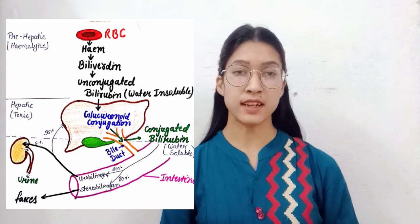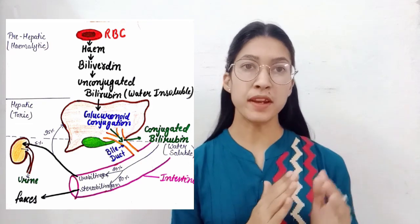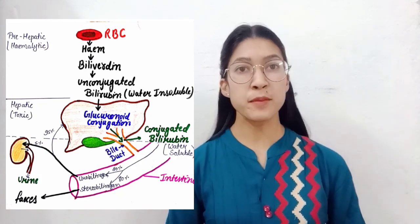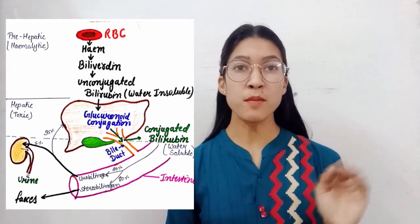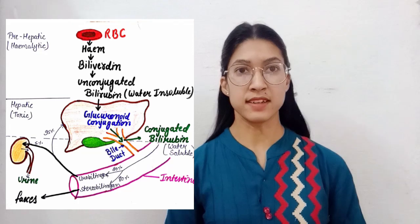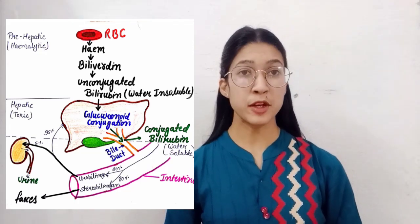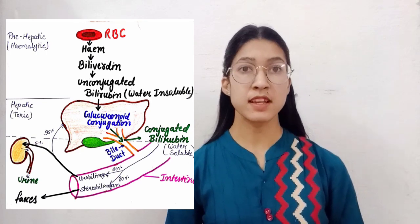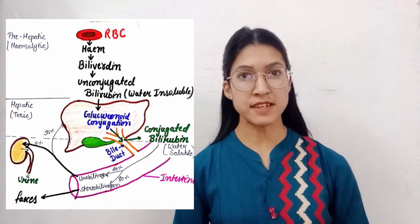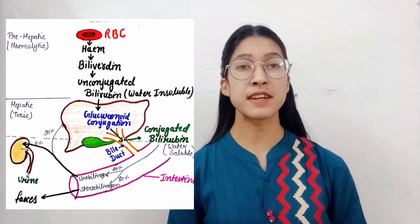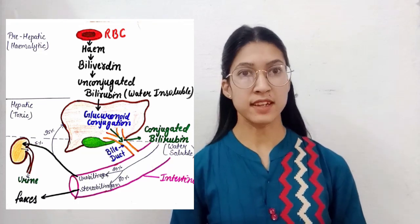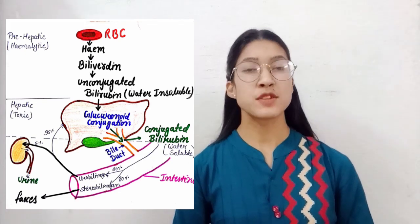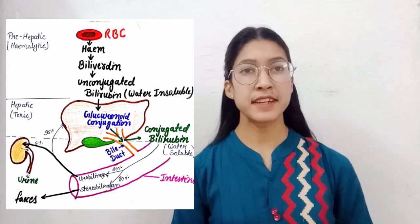Whenever hemolysis occurs, hemoglobin is broken down into heme and globin, and heme is finally converted into bilirubin. This bilirubin is present in the form of free or unconjugated bilirubin, which is very difficult to excrete from the body. That's why the liver converts it into conjugated bilirubin via glucuronide conjugation, making it water soluble and easy to excrete. This conjugated bilirubin then goes to the intestine via the bile duct and is excreted through feces and urine.